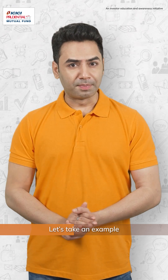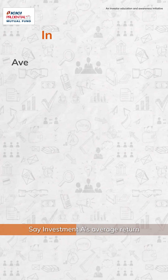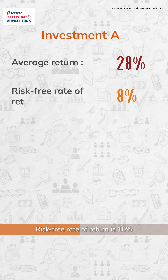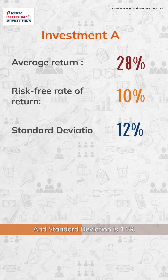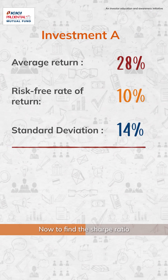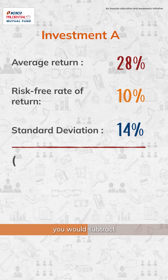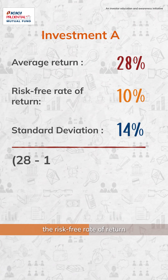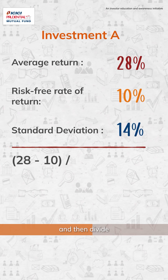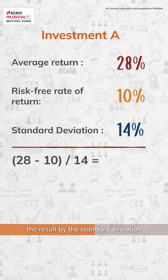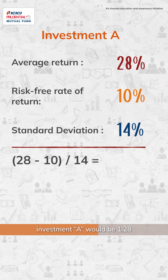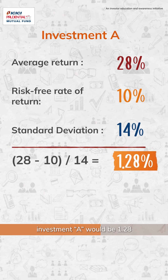Let's take an example. Say, investment A's average return is 28%, the risk-free rate of return is 10%, and the standard deviation is 14%. To find the Sharpe Ratio of the investment, you would subtract the risk-free rate of return from the average return of the portfolio, and then divide the result by the standard deviation of the portfolio's returns. So, the Sharpe Ratio for investment A would be 1.28.